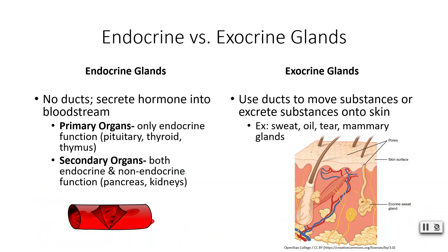Although this lecture revolves around the endocrine system and endocrine glands, we also have exocrine glands, so let's quickly compare. Endocrine glands do not use ducts — the hormones are secreted into the bloodstream where they make their way through the body. We have two different categories of endocrine glands or endocrine organs: primary and secondary. Primary endocrine organs only have endocrine function, for example your pituitary, your thyroid, and your thymus.